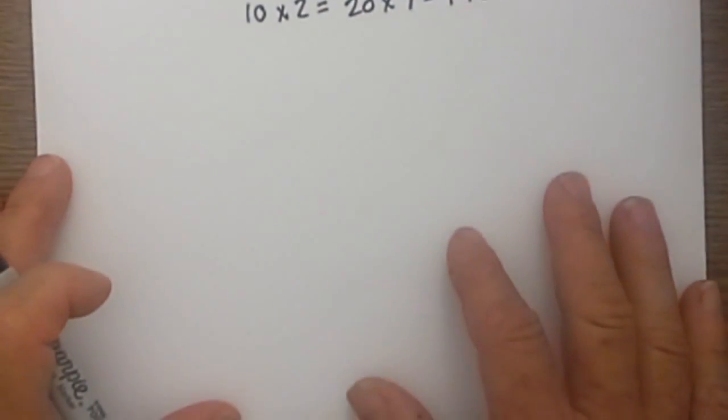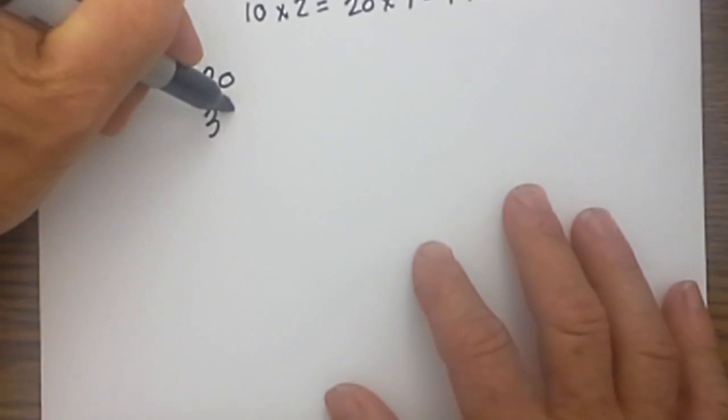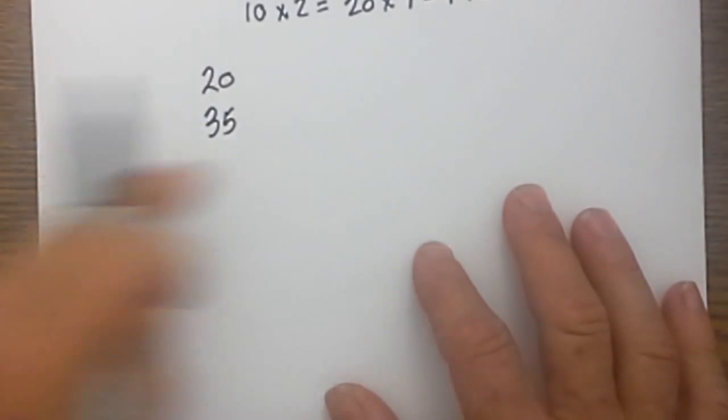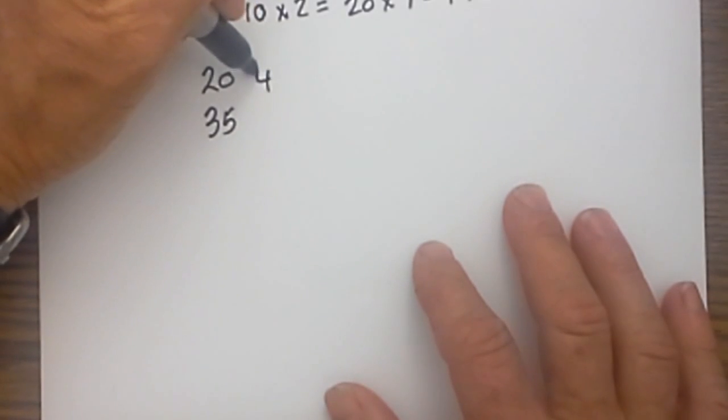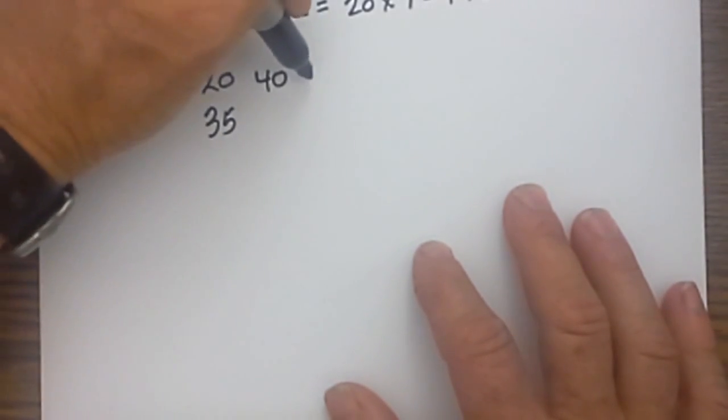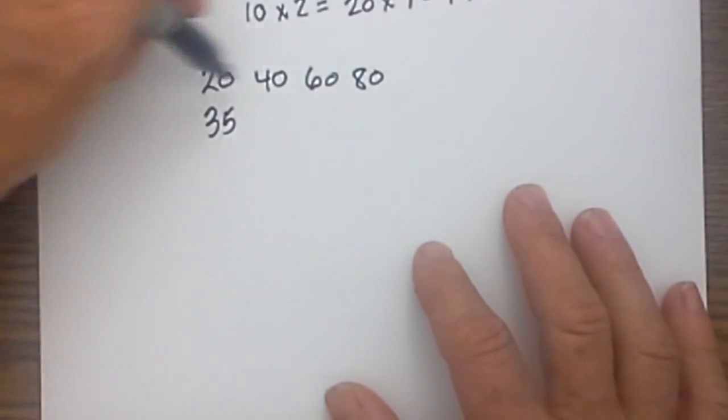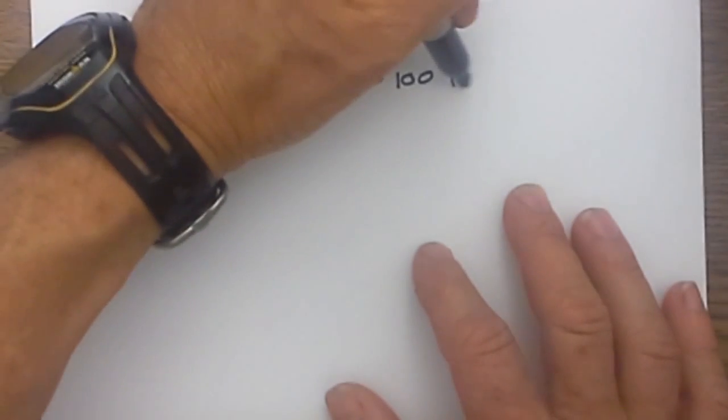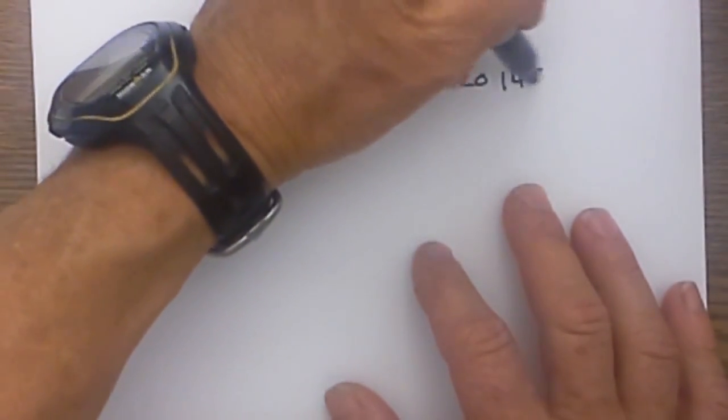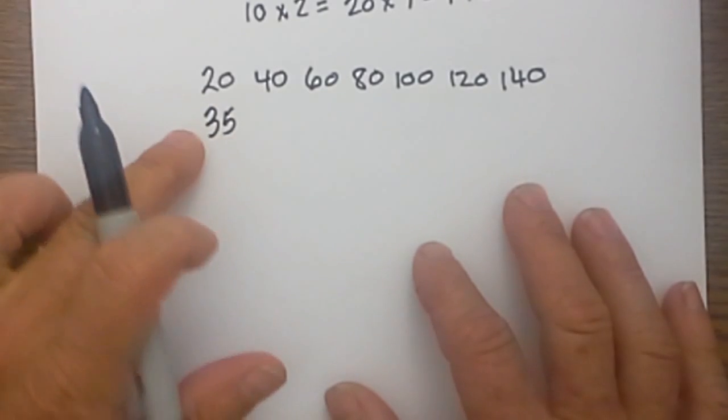Now let's use the traditional method. I have 20 and 35 and multiply 20 times 2 which is 40, 20 times 3 which is 60, 20 times 4 which is 80, 20 times 5 which is 100, 120 and 140.